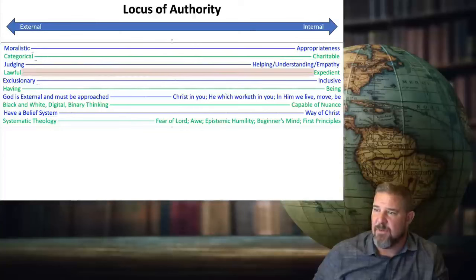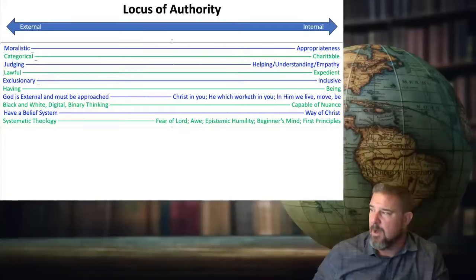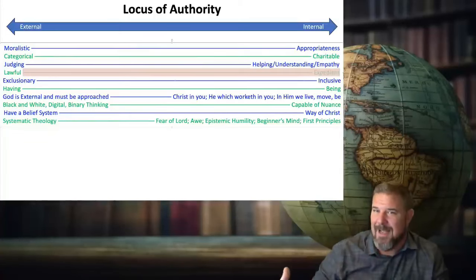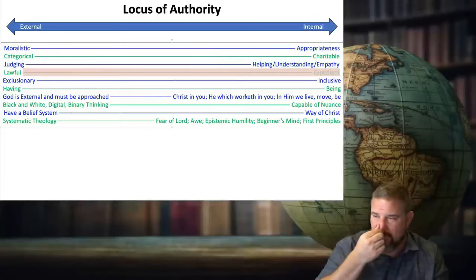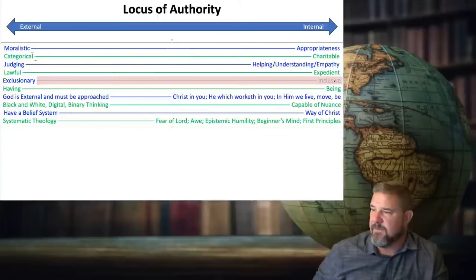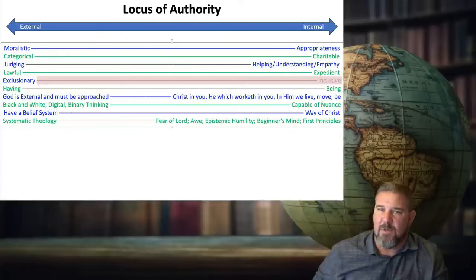External locus of authority is more about keeping the law. Internal is more about being whatever is expedient for what your current aim is. All things are lawful for me, but not all things are expedient. 1 Corinthians 6:12. External locus of authority is very exclusionary, us and them. The internal locus of authority is very inclusive. We have room for everybody. And we can help everybody. We can do something to get everybody to the next rung on the ladder of their transformation.